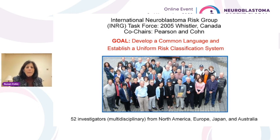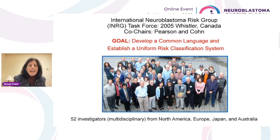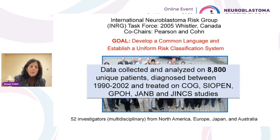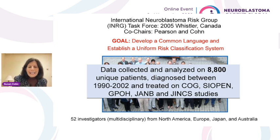So way back in 2005, Andy Pearson from the UK and I led an international neuroblastoma risk group task force with the goal of developing a common language to establish a uniform risk classification system that could be used across the globe, so that we would be able to compare our clinical trials and hopefully accelerate progress in the treatment of neuroblastoma. We collected and analyzed data on over 8,800 unique patients diagnosed between 1990 and 2002, treated on COG, SIOPEN, German, and Japanese clinical trials.